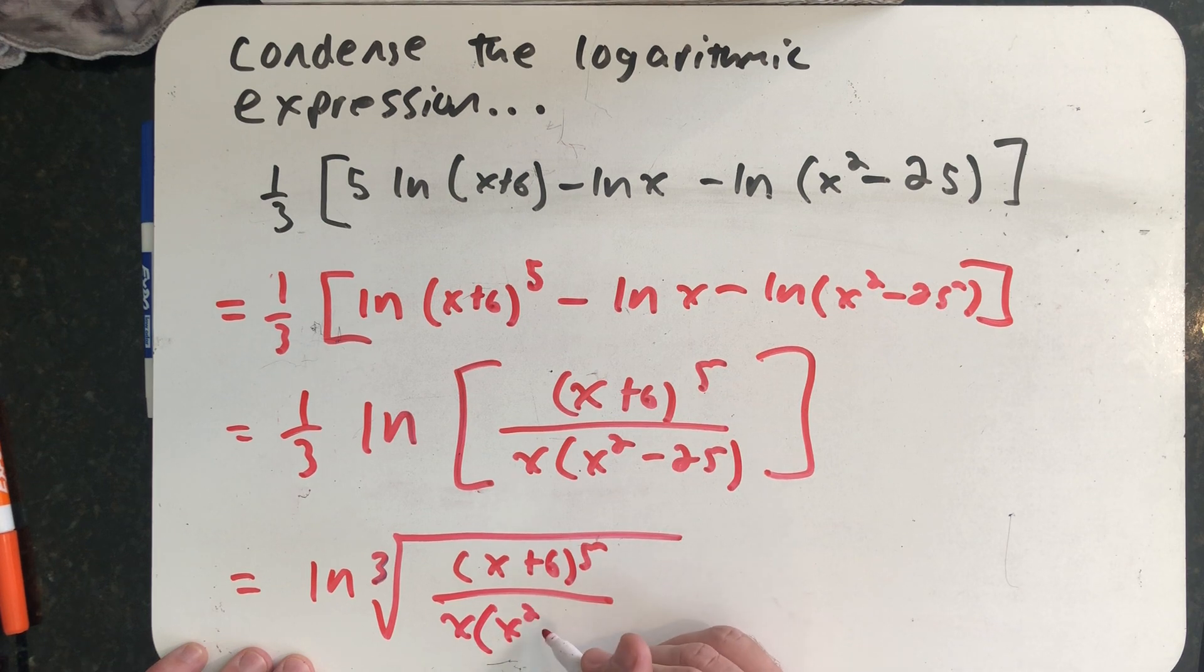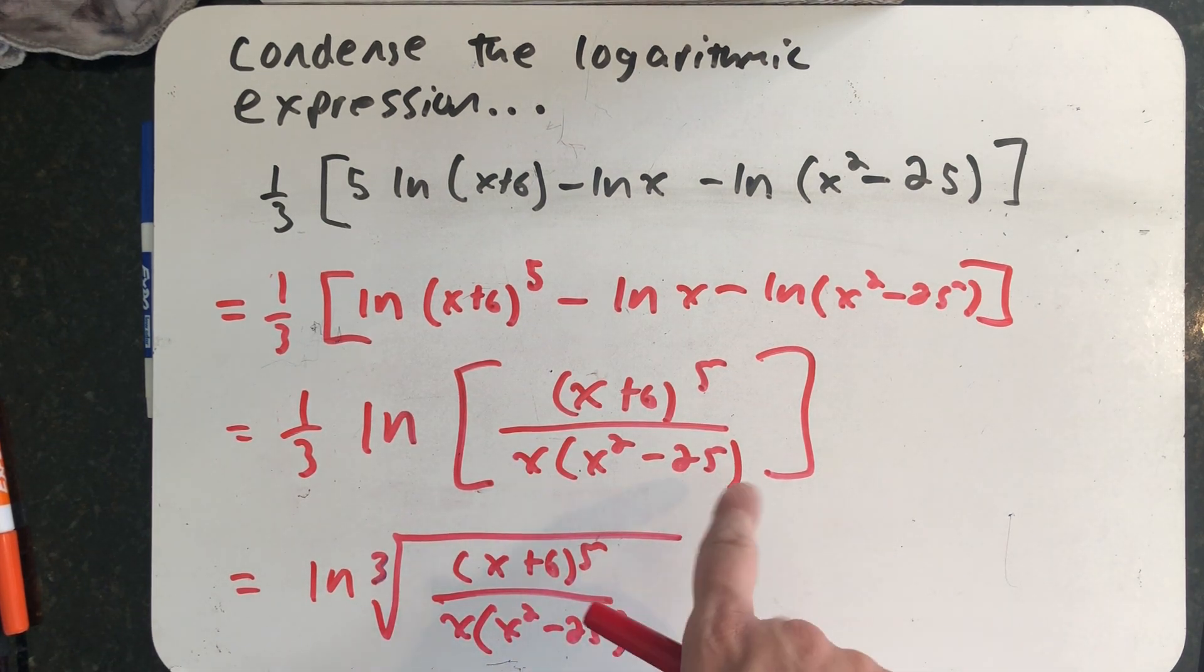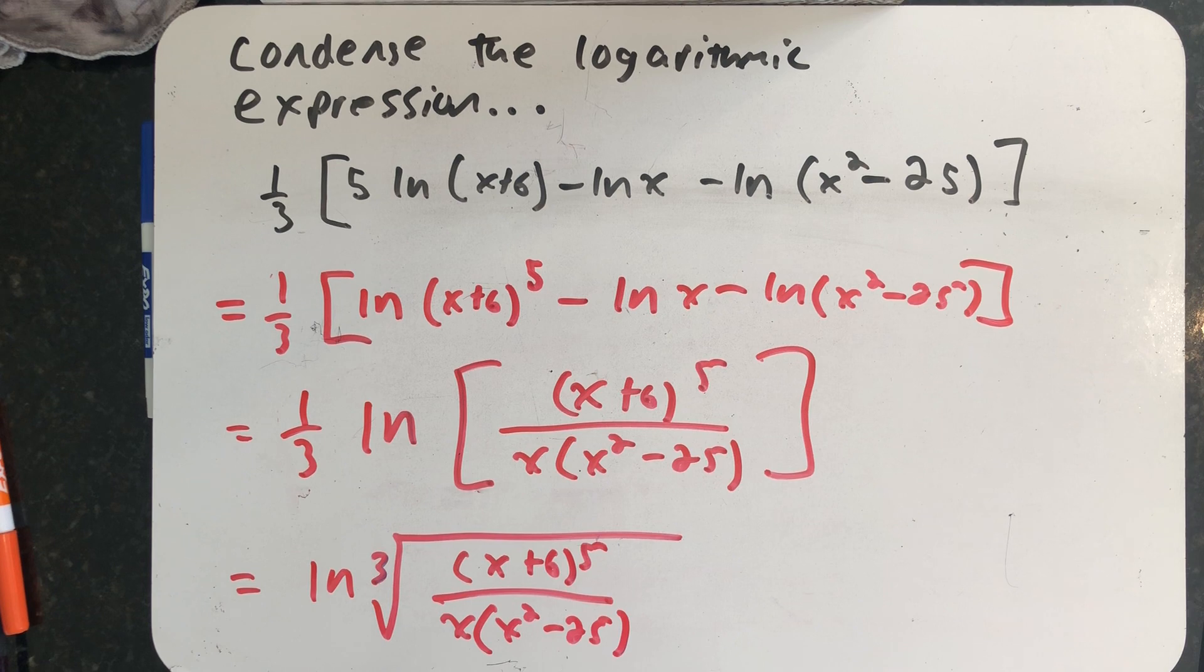It would be no problem to write that as a one third. We could even distribute the one third to the things on the top and the bottom. But here's a condensed natural logarithm that involved algebraic expressions.